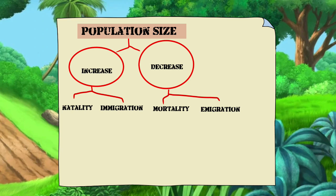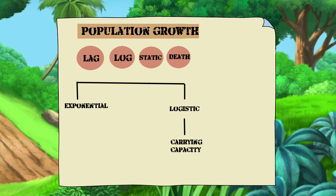In population growth, which is the increase in the number of individuals in a population, there are four phases: lag, log, static, and death. We also have two types of growth patterns: exponential or J-shaped growth pattern, and logistic or sigmoidal or S-shaped growth pattern.